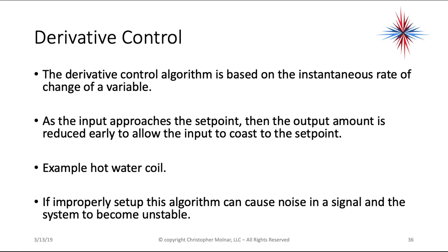Derivative control algorithms are based on the instantaneous rate of change of a variable. As the input approaches a set point, the output amount is reduced early to allow the input to coast to the set point — for example, reducing the valve position of a hot water coil as space temperature nears set point to avoid overshoot. However, if improperly set up, this algorithm can cause noise in a signal and make the system unstable, where it fails to maintain temperature at all.